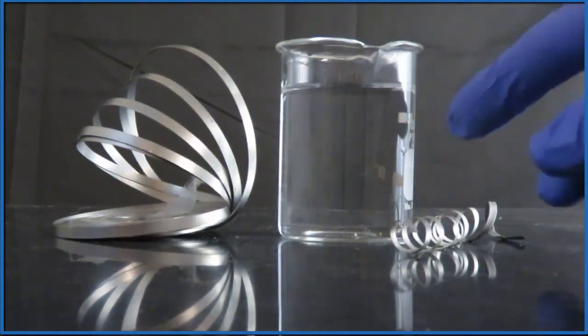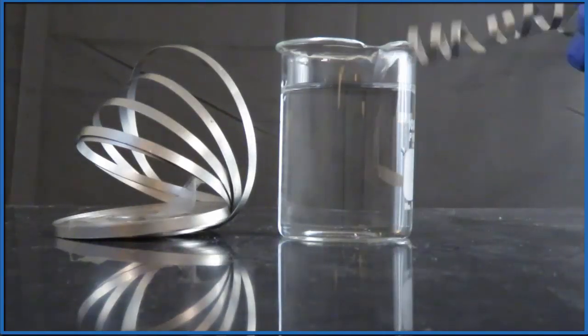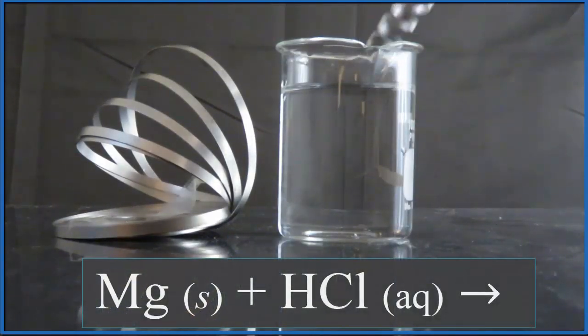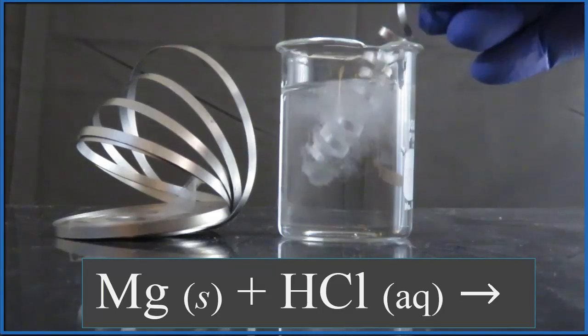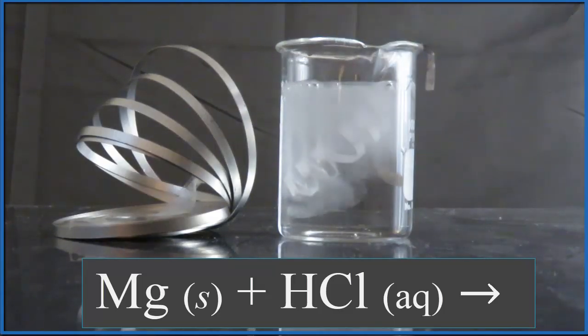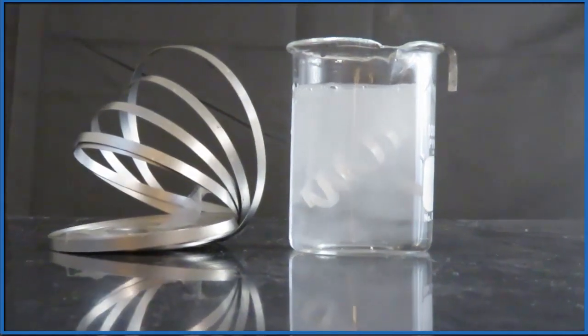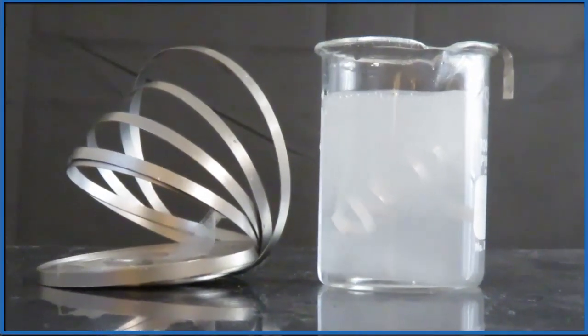So we take the magnesium ribbon, that solid magnesium ribbon, and we put it in the hydrochloric acid. Right away we see that reaction - those bubbles. Bubbles are usually a good sign of a chemical reaction.